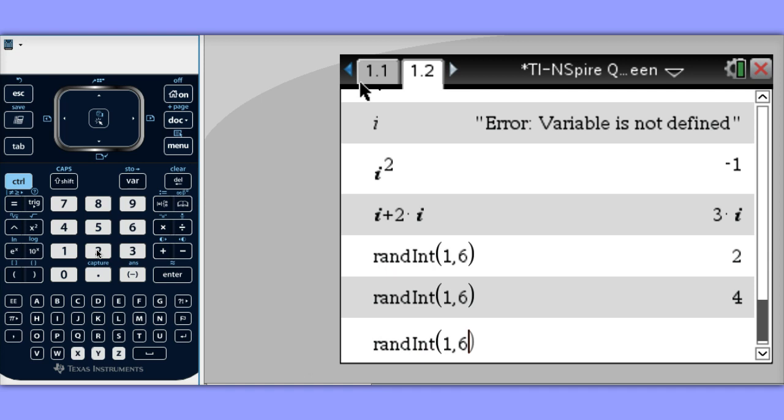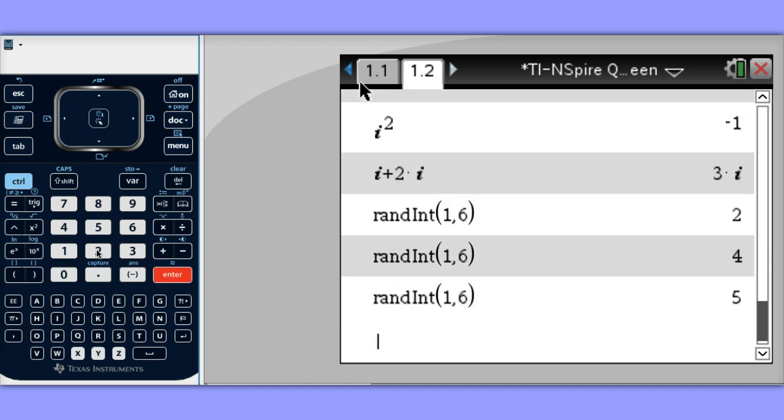I bet I can't do this three times in a row. Because probably that would be 1 out of 216. I'm going to guess it's a 5. How did I know that?